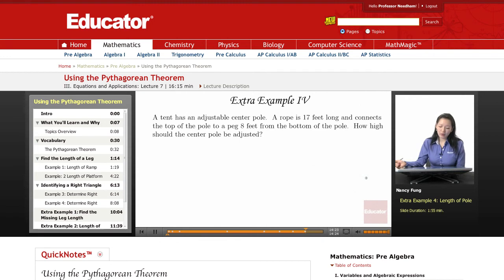A tent has an adjustable center pole. A rope is 17 feet long and connects the top of the pole to a peg 8 feet from the bottom of the pole. How high should the center pole be adjusted?